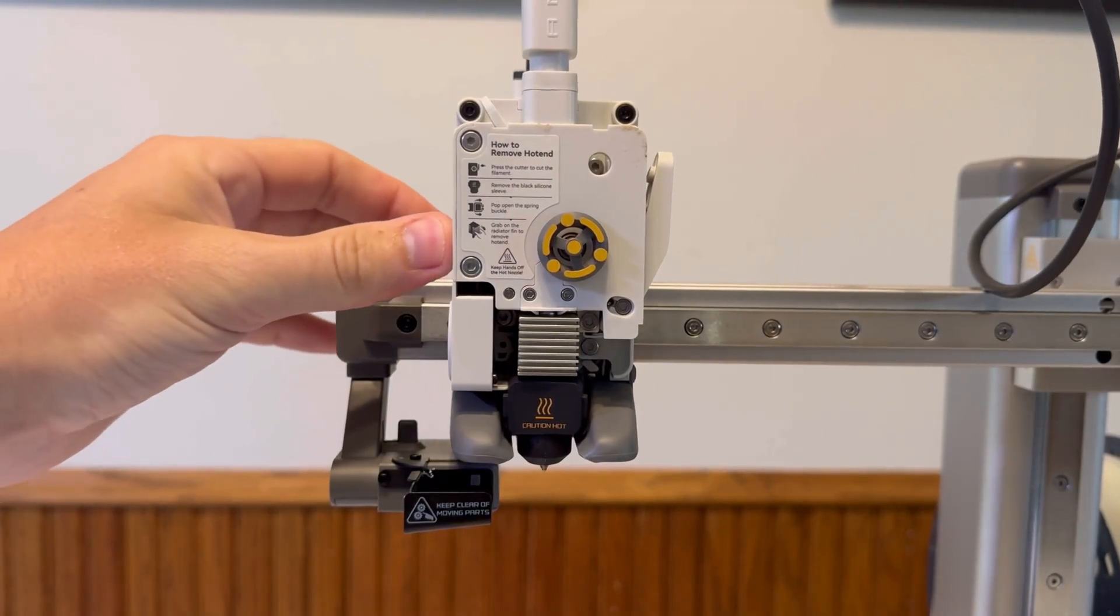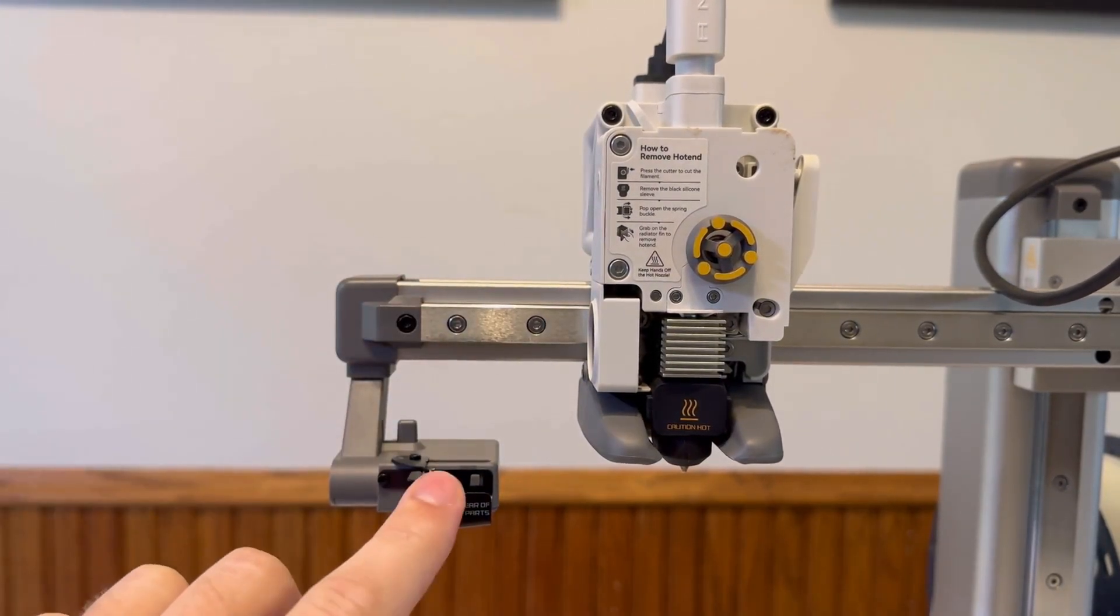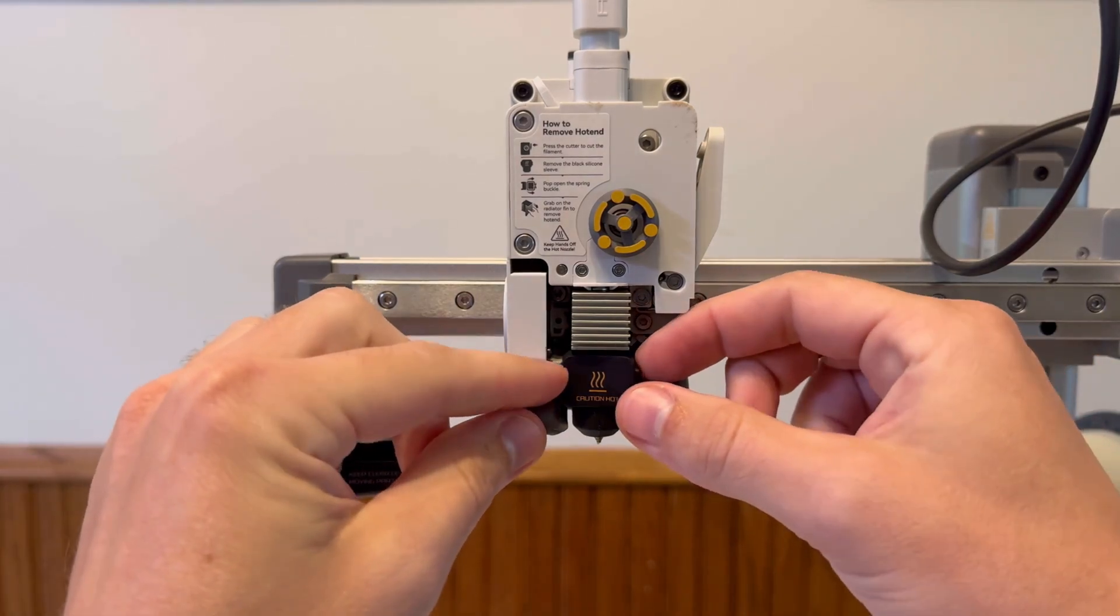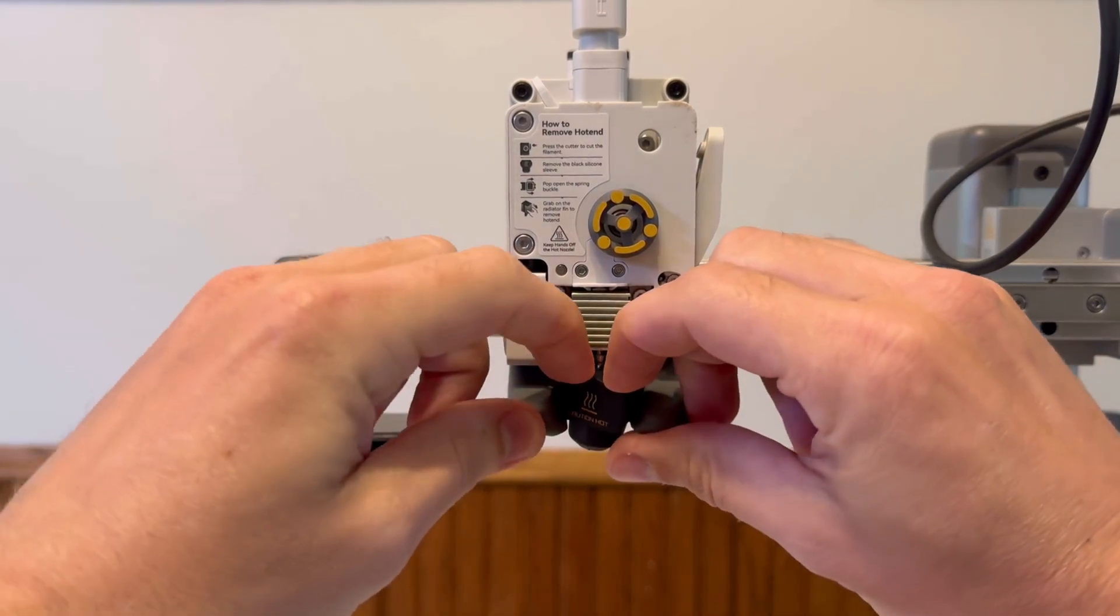Next what we want to do is move this head unit over a little bit, just so it's out of the way. Next we want to remove this nozzle cover. This is like a little rubberized cover, you can kind of just pull this down here.